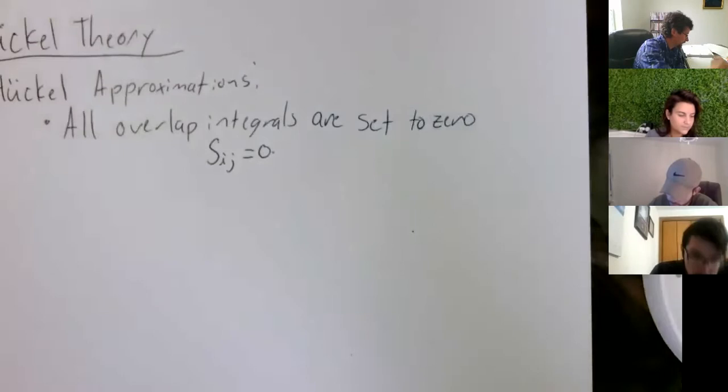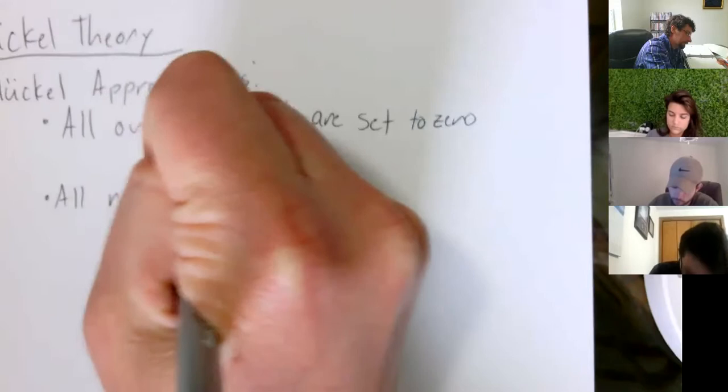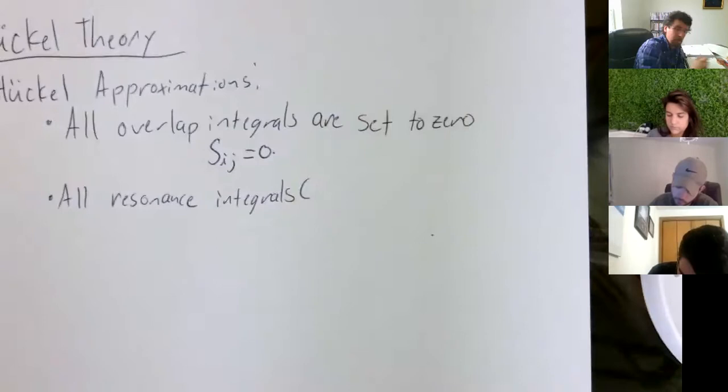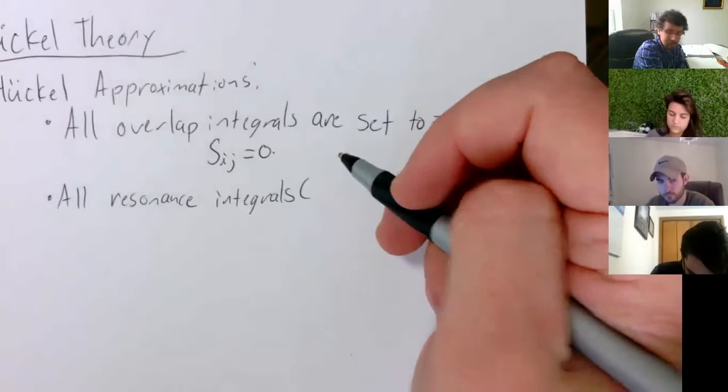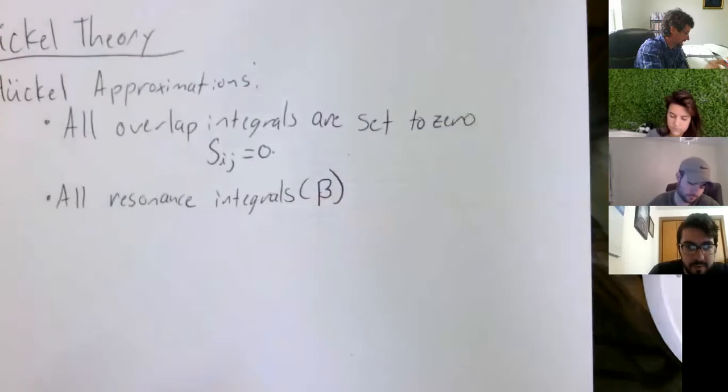So next, all resonance integrals, which we gave them the symbol of what? R maybe? Nope, not R. Beta. All beta. Beta, okay.